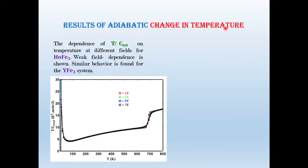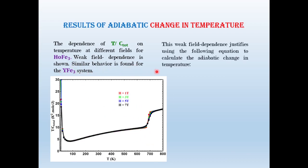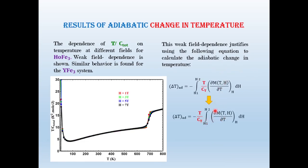The results of adiabatic change in temperature. The dependence of T over C on temperature at different fields for holmium iron-3 shows weak field dependence. Similar behavior is found for the yttrium iron-3 system. This weak field dependence justifies using the following equation to calculate the adiabatic change in temperature.